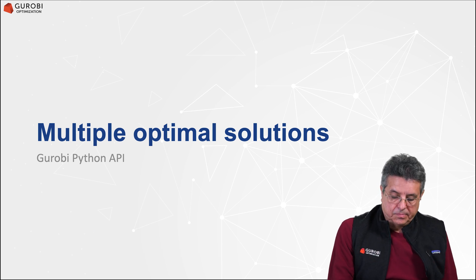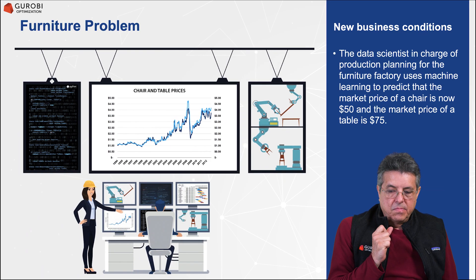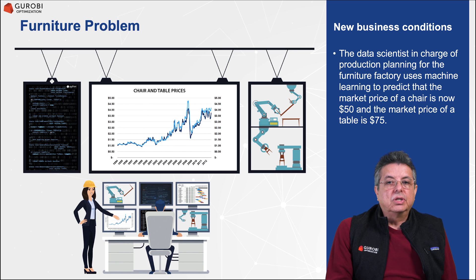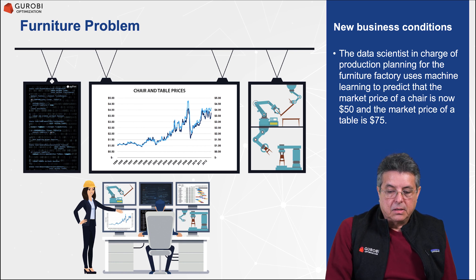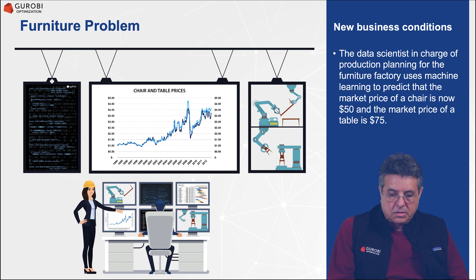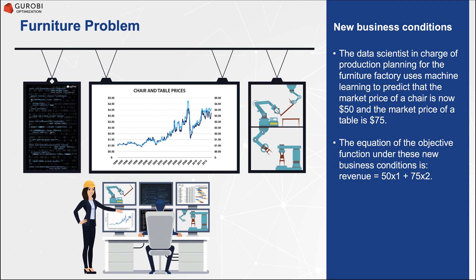The data scientist in charge of production planning for the furniture factory uses machine learning to predict that the market price of a chair is going to be $50 and the market price of a table is going to be $75. The objective function will be defined as follows: the total revenue is $50 times the number of chairs plus $75 times x2, the number of tables.